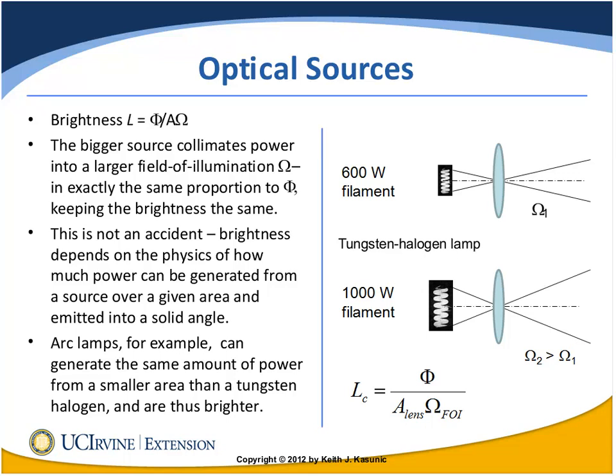The 600-watt filament emits into a certain solid angle omega-1, while the bigger 1,000-watt filament emits into a larger solid angle. If I create a collimator with these two lamps, the illumination angle is larger for the bigger lamp. The brightness of the collimator depends on the area of the lens doing the collimating and the solid angle being emitted into. So the more powerful lamp has more power but emits into a larger solid angle. That ratio stays exactly the same for the two different lamps, so the brightness is the same.